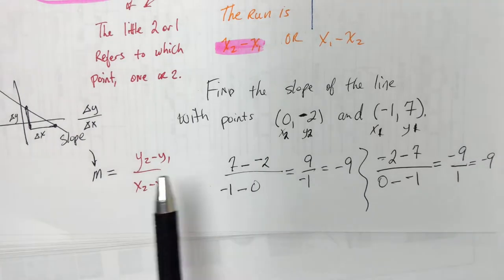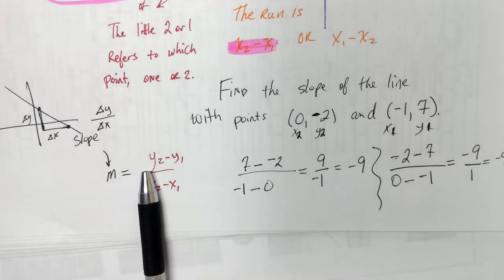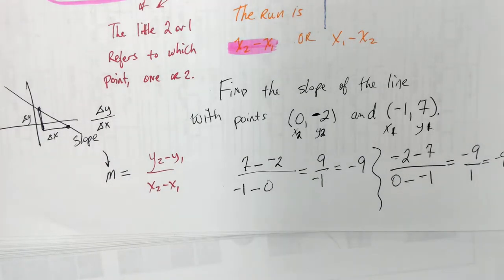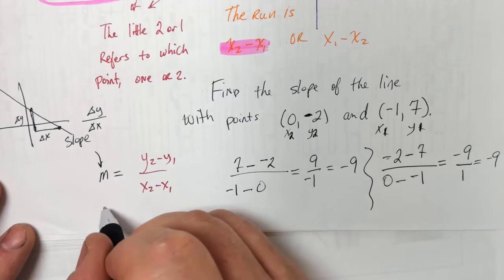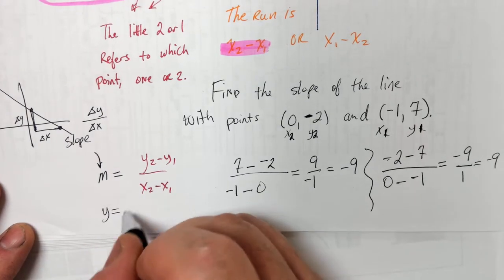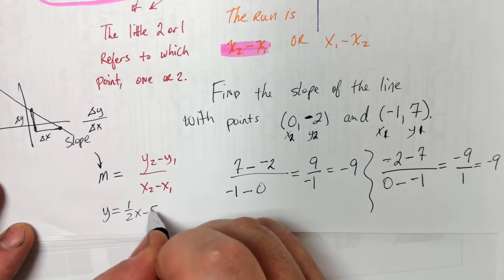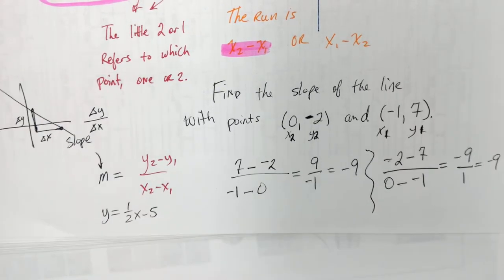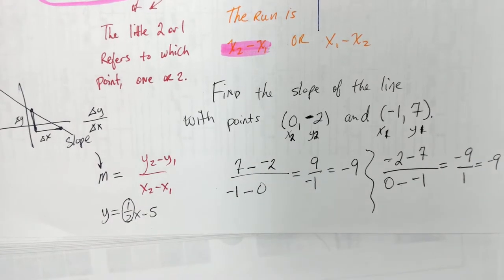You could use the formula if they give you two points. And there's one other way: if they gave you an equation already written out, like one-half x minus 5 — that's slope-intercept form — the slope is one-half.